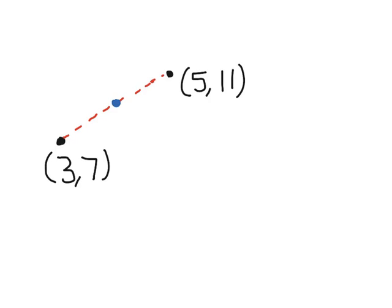To find the midpoint between two points, we just need the average of the x's and the average of the y's. So for our diagram here, the average of 3 and 5 is their total, so that's 3 plus 5, divided by how many numbers we had, which is 2.